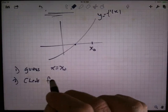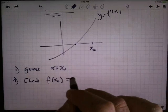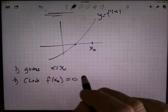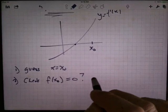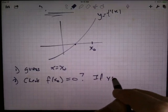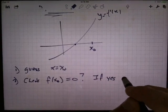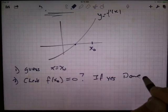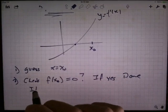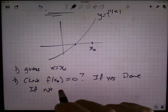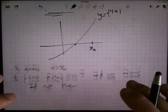Now probably you're wrong, but maybe you're right. So you check f of x₀. Is it equal to zero? If yes, that was a really good guess and we're done. We've got our solution. If not, then do this.